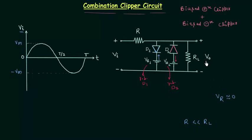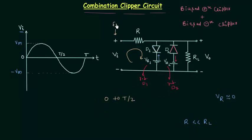Now I will calculate the output voltage V0 for the first half cycle from zero to T/2. The input voltage is positive in this half cycle, so the polarity is plus-minus and the direction of current will be clockwise. This direction of current matches the direction of the arrow in the symbol of diode D1, so Vi is forward biasing D1. This direction is opposite to the arrow in D2, so Vi is reverse biasing diode D2.